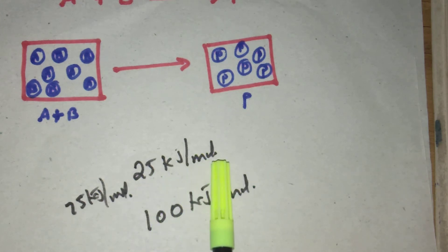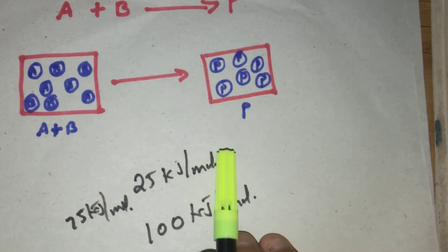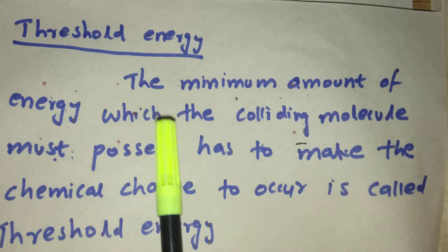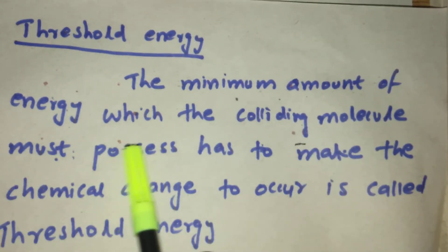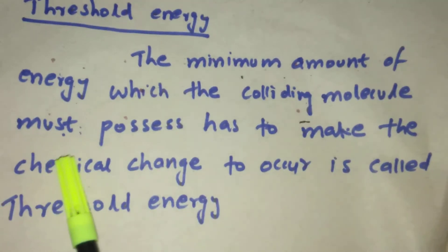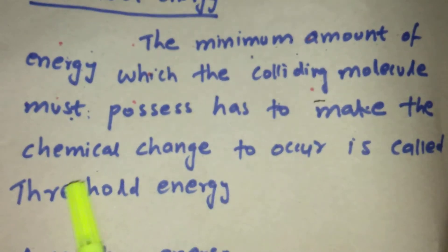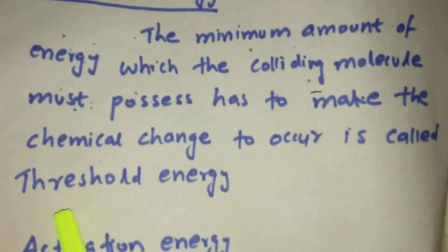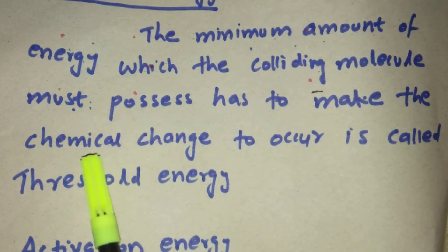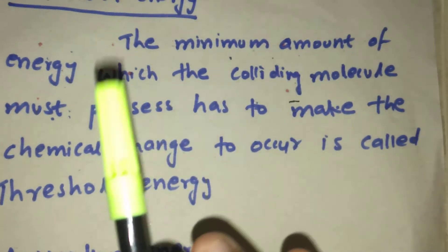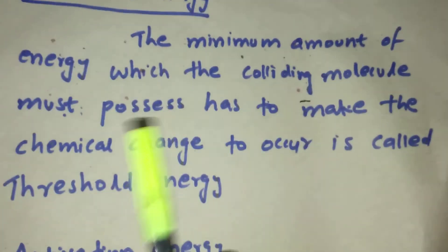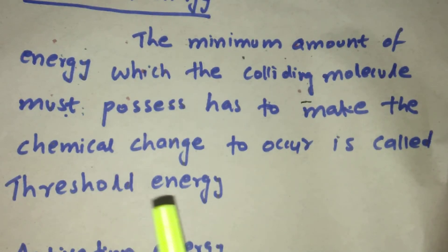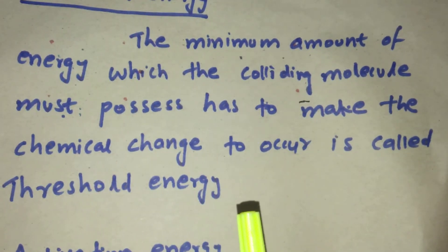Let us go through the definitions. First, threshold energy: it is the minimum amount of energy which the colliding molecules must possess to make the chemical change occur. The chemical change means the reactants are converted into products. The minimum energy required for effective collision is called threshold energy.